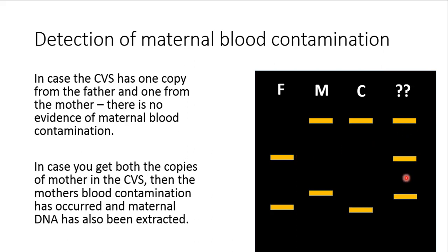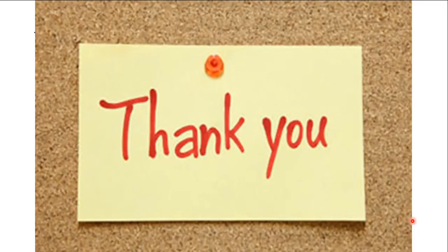However, if we get a pattern where one band corresponds to the father and one to the mother — so far so good — but an additional band is also present which corresponds to the mother, then what you're actually finding is both copies of the maternal VNTR pattern in the chorionic villi sample. This can occur only when maternal blood has contaminated the DNA being extracted from the chorionic villi. This point is very important and has profound implications for antenatal thalassemia diagnosis. Thank you for listening, and more about antenatal thalassemia diagnosis will be covered in the next lecture.